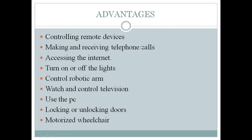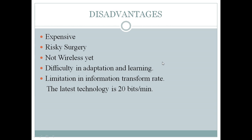These capabilities are especially beneficial for people who have lost natural body functions due to accidents or disease. Disadvantages include the system being expensive, surgery being risky since a chip is implanted in the brain, and it not being wireless yet — requiring a wired connection. There is also difficulty in adapting, and a limitation in information transfer rate of around 20 bits per minute, although wireless advances have improved this significantly.